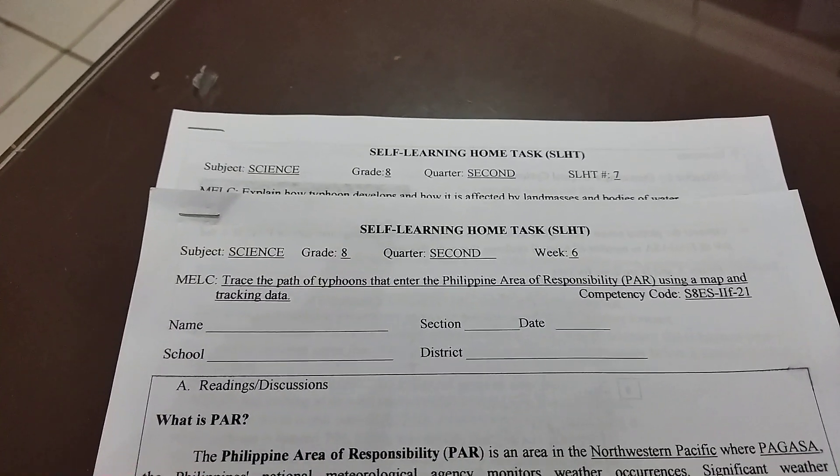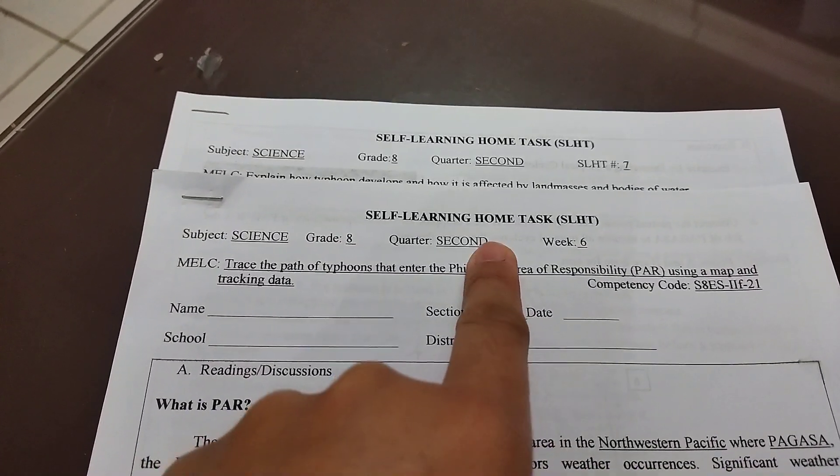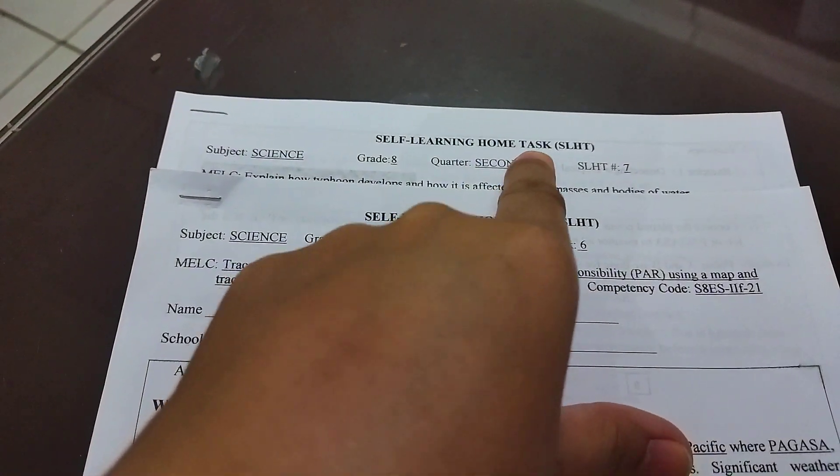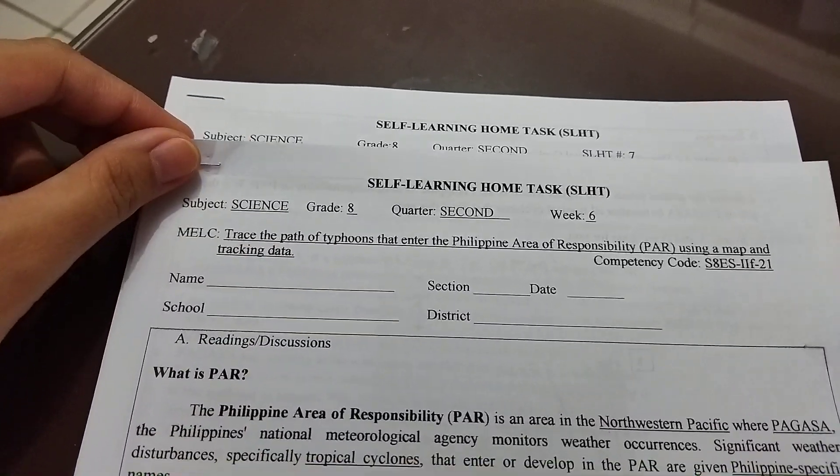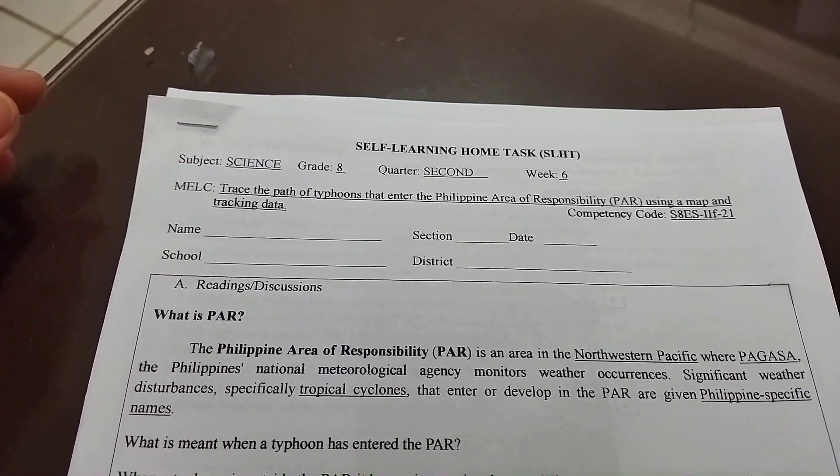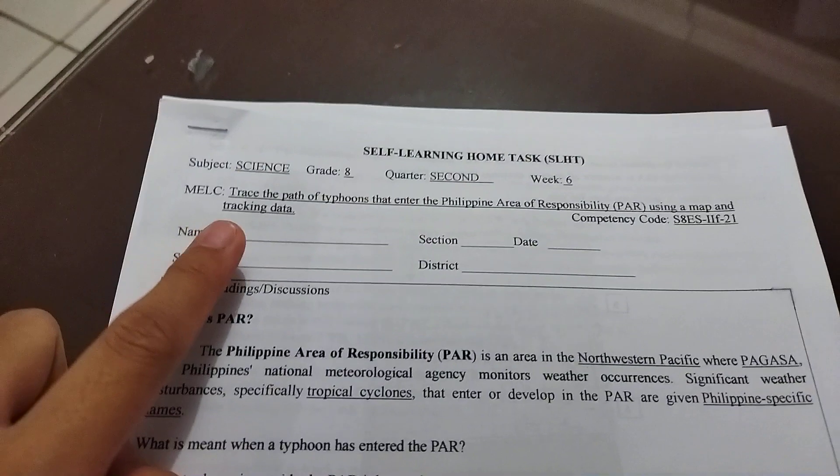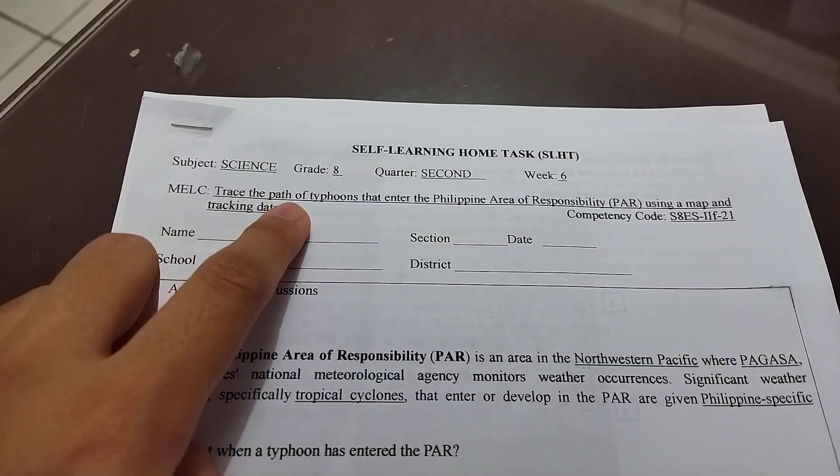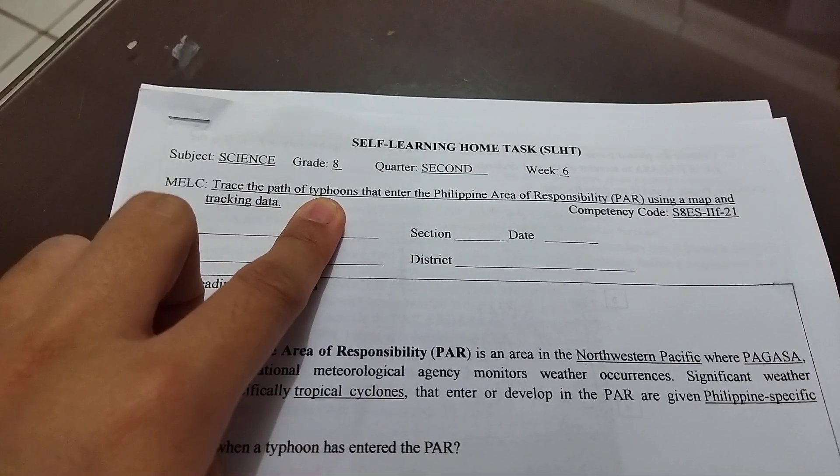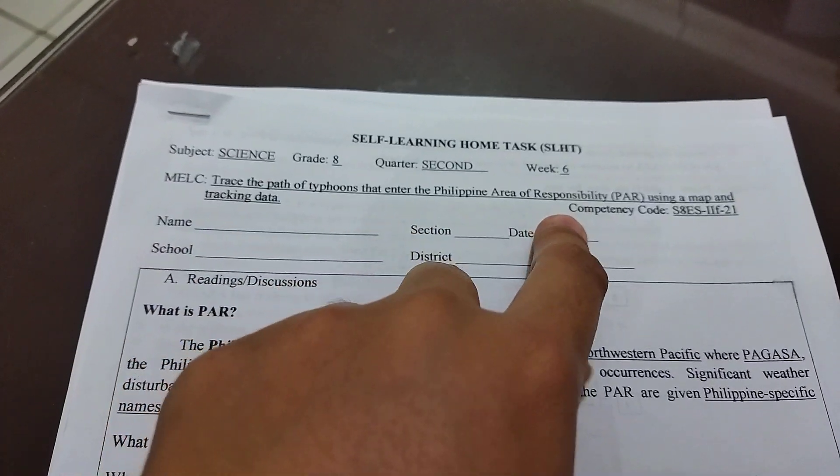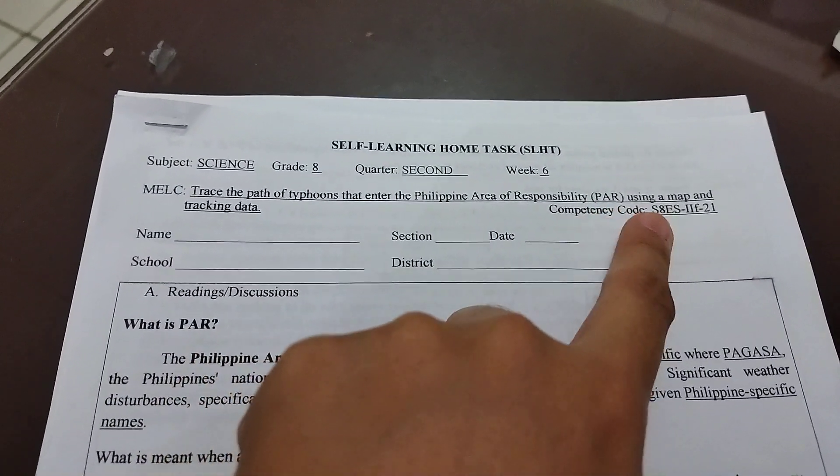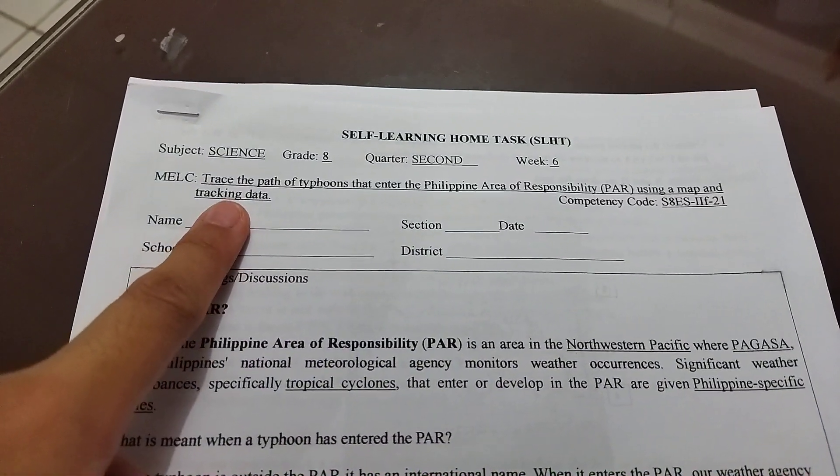Good morning everyone. This is our home task number 6 and home task number 7 in Science. In SLHT number 6, we are going to trace the path of typhoons that enter the Philippine Area of Responsibility or PAR using a map and tracking data.